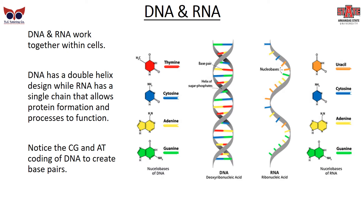As you can see here, DNA and RNA work together within the cells. RNA is ribonucleic acid, and DNA is deoxyribonucleic acid. DNA has a double helix design, while RNA is a single chain, which allows for protein formation and cellular processes to function. Notice that C and G — cytosine and guanine — and A and T — adenine and thymine — are always paired together. That is called the base pair, and the coding of the DNA. RNA is different in that instead of thymine, it has uracil, but it uses the same basic coding pattern to make copies of itself and to make proteins.